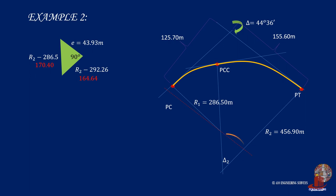How about the central angles? One angle in the analyzed triangle is actually delta 2. Since we have a right triangle, the tangent of delta 2 is 43.93 over 164.64. Delta 2 is computed as 14 degrees 56 minutes. Delta is given as 44 degrees 36 minutes and is the summation of delta 1 and 2. We deduct delta 2 from it to have delta 1, which is 44 degrees 36 minutes less 14 degrees 56 minutes, giving us 29 degrees 40 minutes.